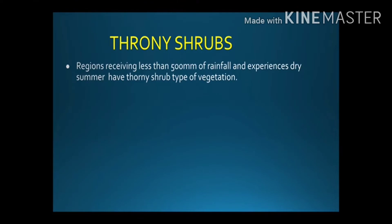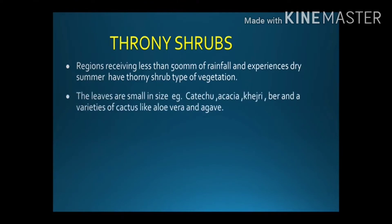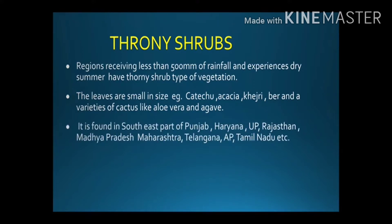Thorny shrubs are found in regions receiving less than 500 millimeters of rainfall and experiencing dry climate. The leaves are small in size. Examples include catechu, acacia, khejri, and varieties of cactus like aloe vera and agave.